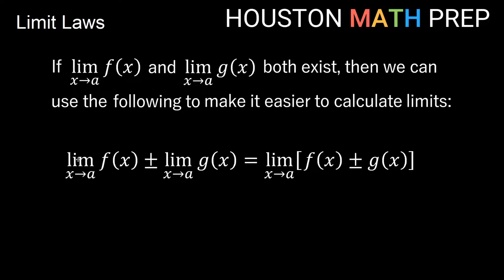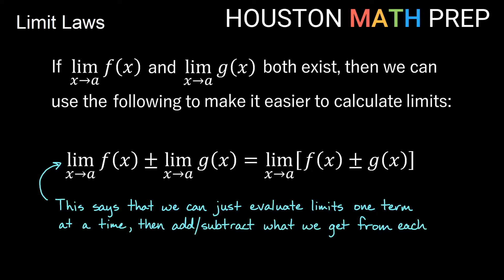As we approach x equals a on both the function f(x) and g(x), if we have addition or subtraction between two limits, that's the same as taking the limit of just adding or subtracting the functions. This is basically saying we can evaluate limits one term at a time, then just add or subtract whatever we get from plugging into each term.